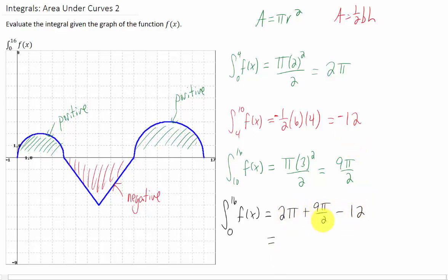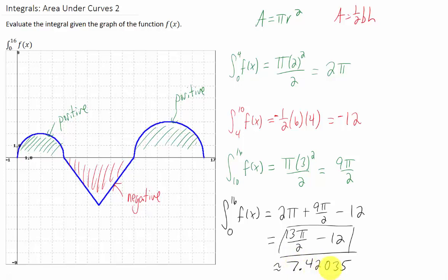Let's see, 2 pi plus 9 halves pi. That's 4 halves pi plus 9 halves pi. That's 13 halves pi minus 12. And that answer is pretty nice. If you want an approximate answer, plug it into your calculator. It's going to turn out to be about 7.42. And I think we're finished with this problem.